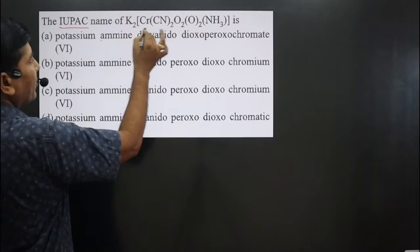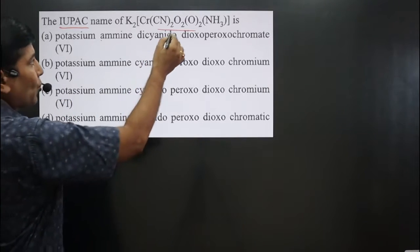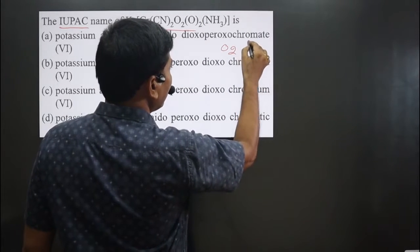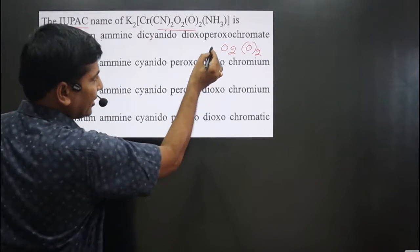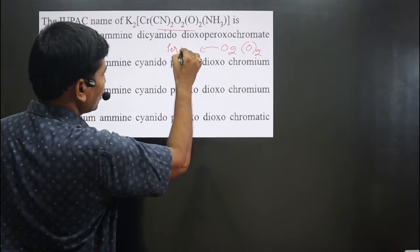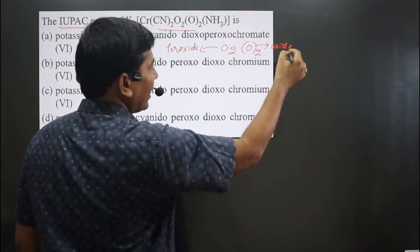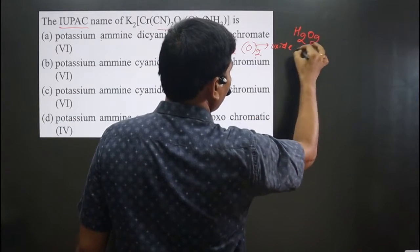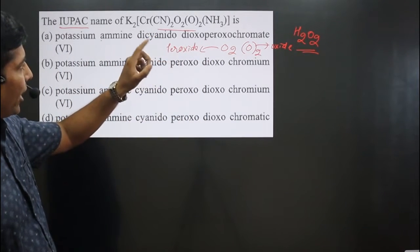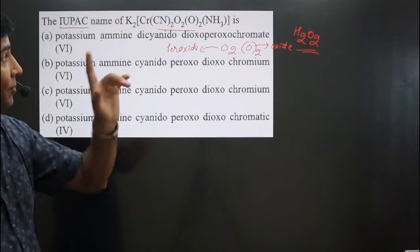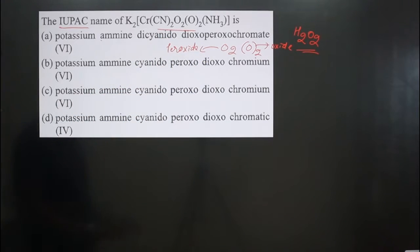The question asks to name a coordination complex. This is very interesting — pay attention carefully. It is interesting because O₂ is present here, and we also have (O)₂. Keep in mind: this is a peroxide, and this other one is a common oxide — just like H₂O₂ is hydrogen peroxide. This makes calculating the oxidation number of the central metal atom quite tricky; if you get confused, you will definitely mess up the oxidation number.